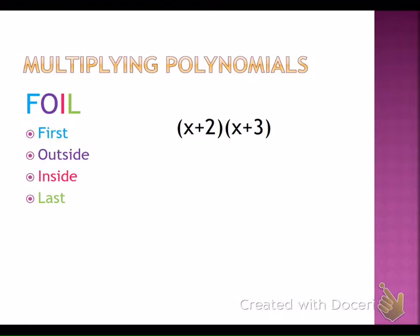Let's talk about the different letters. First of all, the F stands for the first term, so we are supposed to be multiplying the first terms. The first term in the first set of parentheses is x, and the first term in the second set is also x. So when they ask us to multiply the first terms, we're multiplying x times x. When we multiply powers with the same base, you add the exponents, so x times x is x squared.